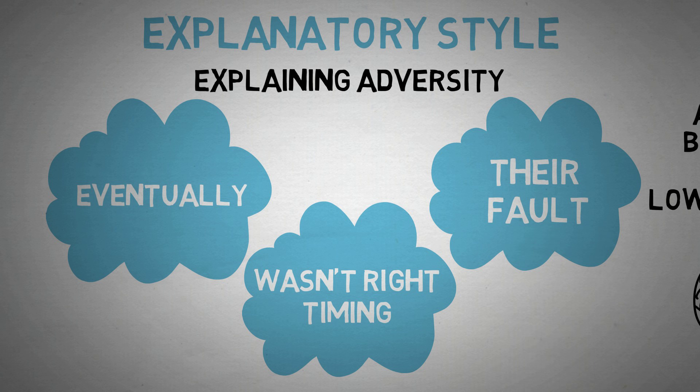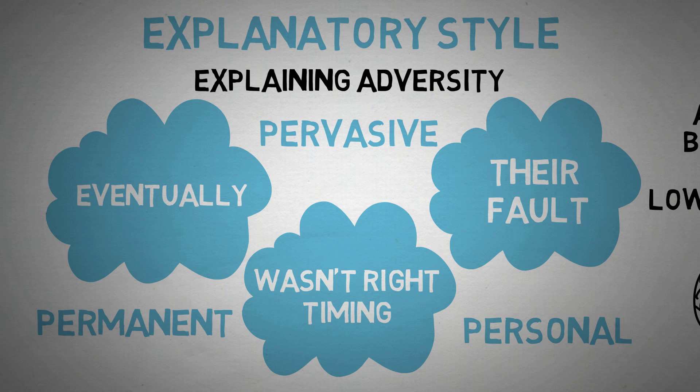The thing that separates these is that pessimists rely on permanent, pervasive, and personal statements. It is permanent because they believe that it will happen forever. It is pervasive because they believe that it is a trait. It is personal because they believe it's all their fault, and the environment had nothing to do with it.